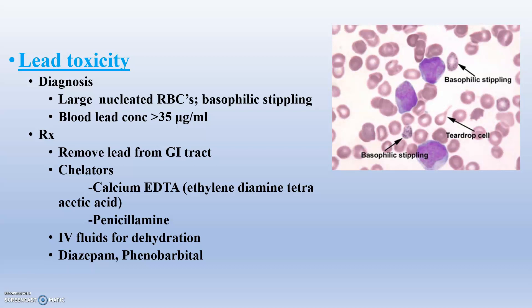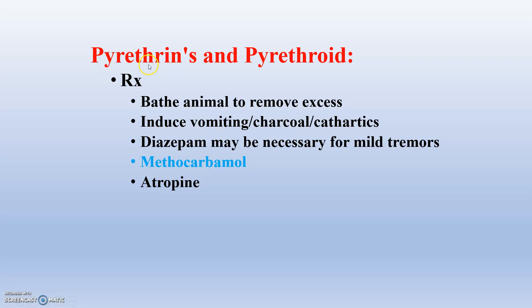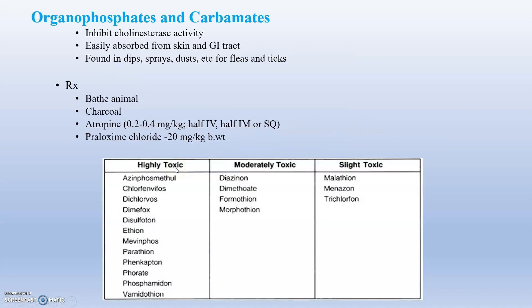For lead toxicosis, diagnosis shows basophilic stippling and large nucleated RBCs. Treatment involves gastric lavage to remove lead from the GI tract, chelation therapy, IV fluids for dehydration, and diazepam and phenobarbital to prevent seizures. For pyrethrin and pyrethroid toxicity, bathe the animal and use benzene or alcohol; for ingested cases, induce vomiting and use charcoal cathartics; atropine can also be applied. For organophosphates and carbamates, which inhibit cholinesterase activity, atropine is the best treatment.